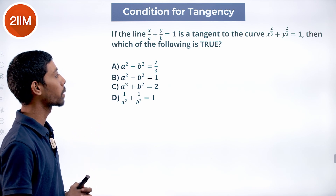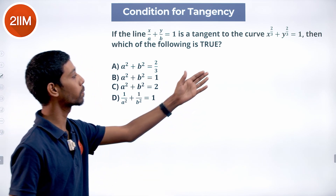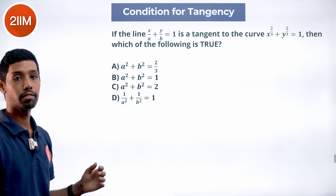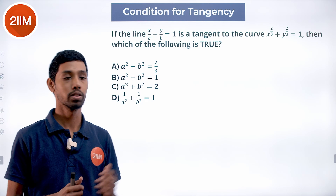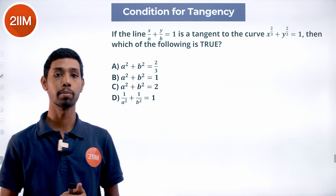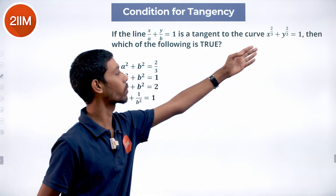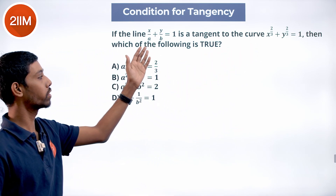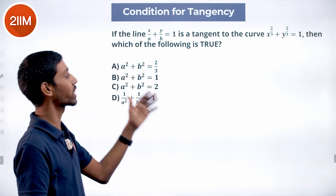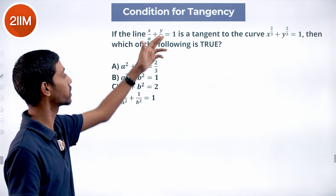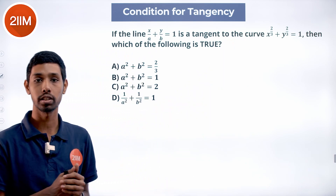If the line x/a + y/b = 1 is a tangent to the curve x^(2/3) + y^(2/3) = 1, then which of the following is true? This is probably one of the trickiest questions in the PGDPA paper. They have given a curve equation and a line which has to be a tangent to the curve, and they are asking us to find the condition for which this line will be a tangent to that curve.